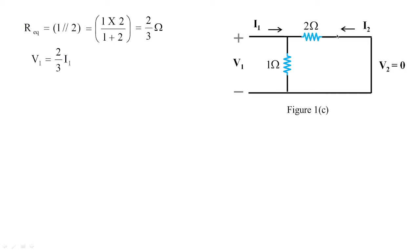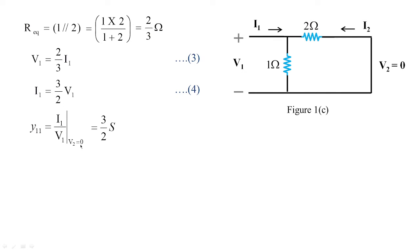Since V1 = (2/3)·I1, we get I1 = (3/2)·V1, treating these as equations 3 and 4. Therefore, y11 = I1/V1 at V2 = 0, whose value is 3/2 Siemens. After obtaining these values of I1 in terms of V1 and hence determining y11, we now need to obtain the other parameter, which is the relation of I2 in terms of V1.